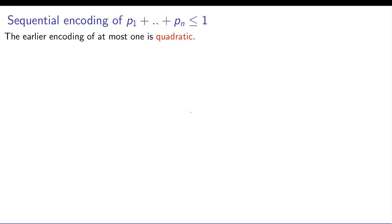The previous encoding we just saw is quadratic because the at most constraint was producing quadratically many clauses. Now we ask the question can we do better? Yes, we can do better.